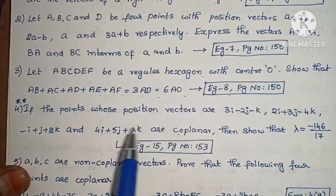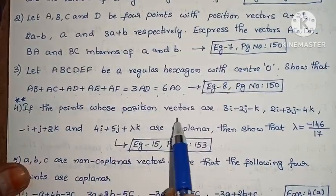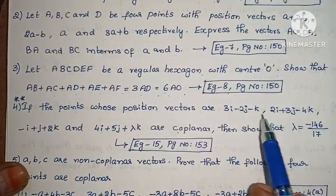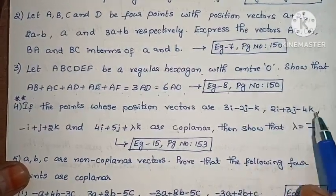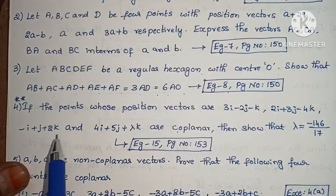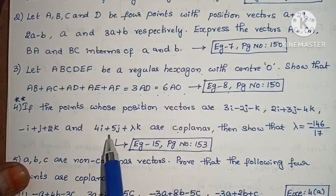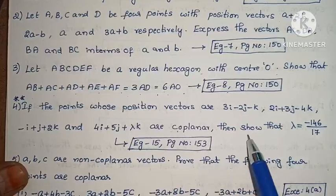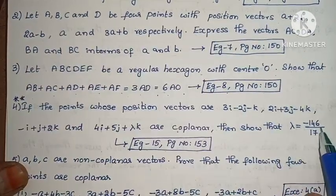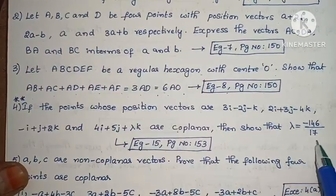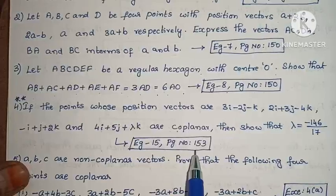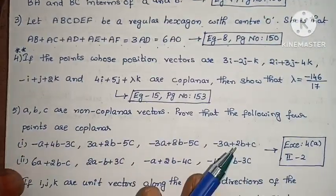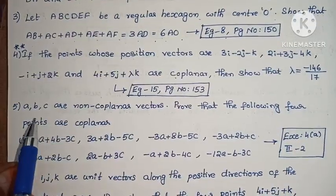Next: This problem frequently repeats in question papers. If the points whose position vectors are 3i minus 2j minus k, 2i + 3j minus 4k, minus i + j + 2k, and 4i + 5j + λk are coplanar, then show that λ equals minus 146 by 17. Example 15, page number 153. This is a very important problem that appears often in question papers.